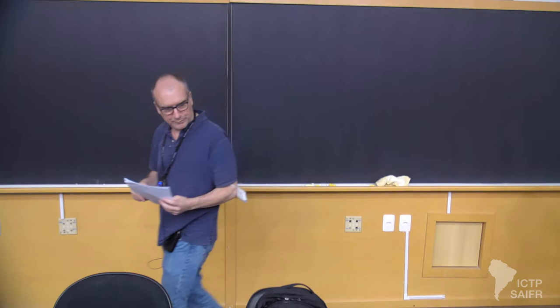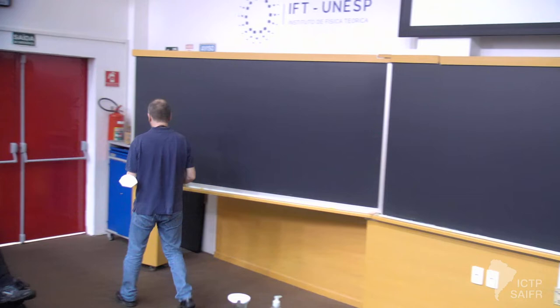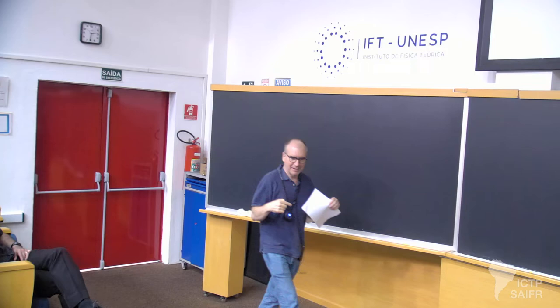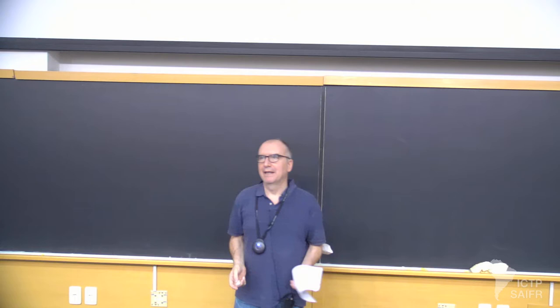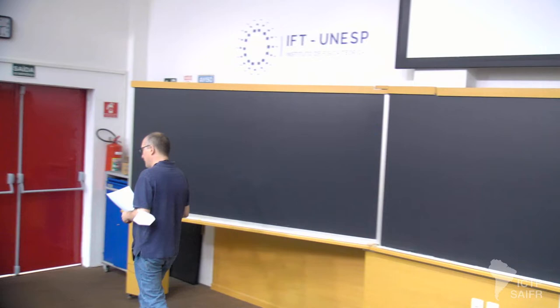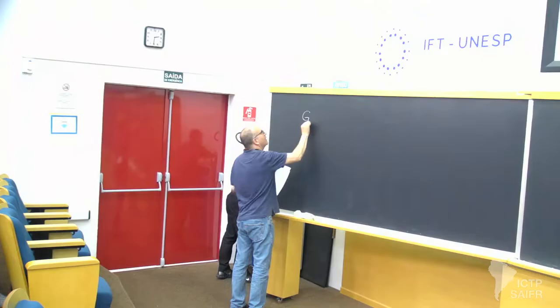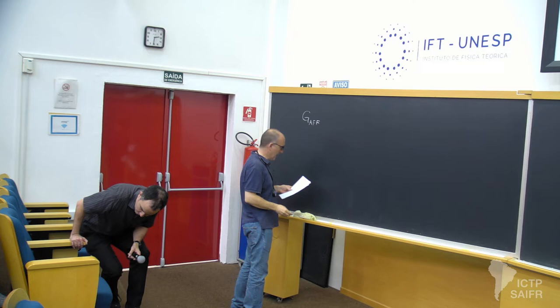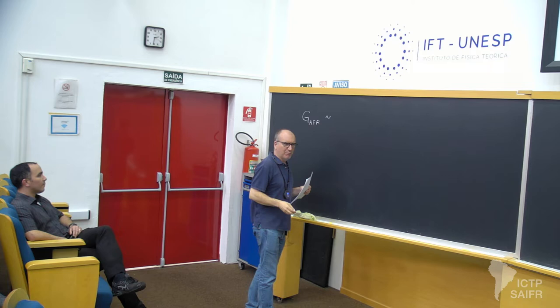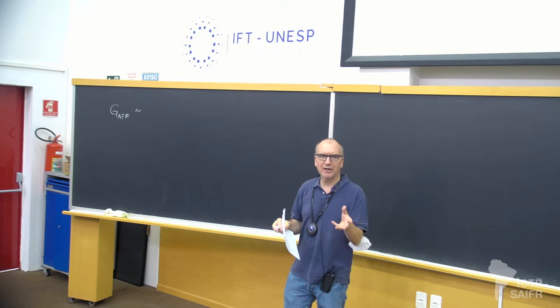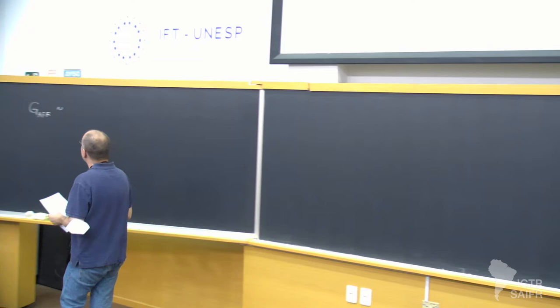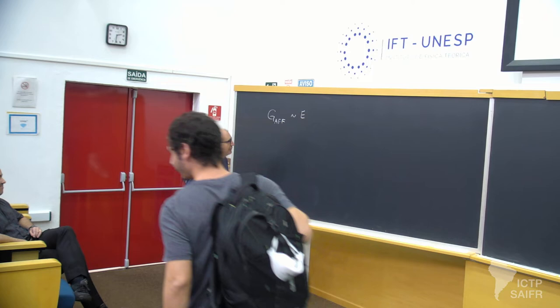So I want to go back to this naive affine model of the shear modulus of a network, and we'll ultimately identify this with an affine modulus. I have not really been making too much of a distinction between Young's moduli and shear moduli. For most materials they differ by not very much, and I'll start to be a little bit more careful and use E here for the Young's modulus.